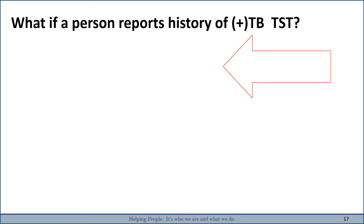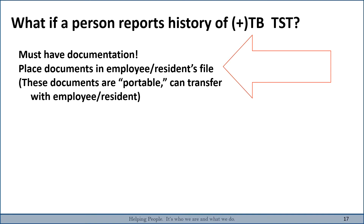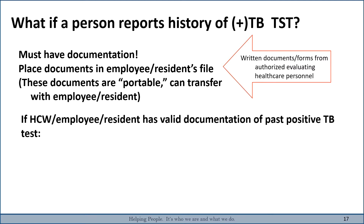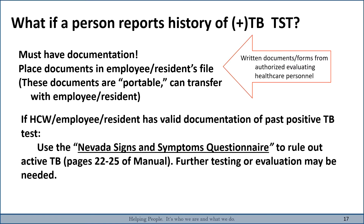What if a person reports a history of a positive TB test? They must have documentation other than just a verbal statement. Documents related to TB are portable, so they should be placed in a resident's file and maintained there, and can be transferred with the employee or resident from location to location. Documentation must come from authorized healthcare personnel who performed the TB test. If a healthcare worker or resident has valid documentation of a past positive TB test, then we use the Nevada Signs and Symptoms Questionnaire to rule out active TB, found on pages 22 to 25 of the manual. Further testing evaluation may also be needed.